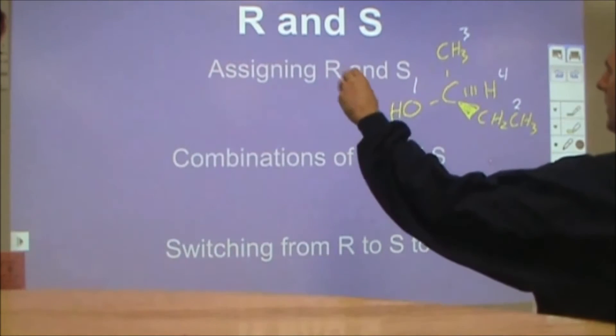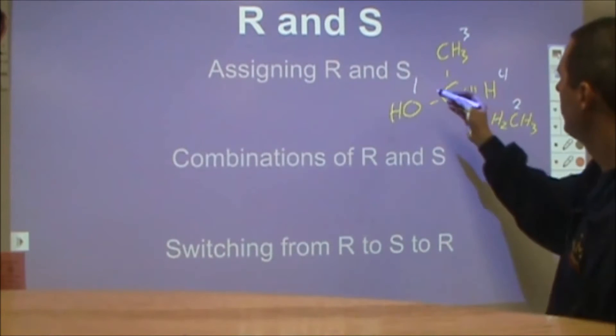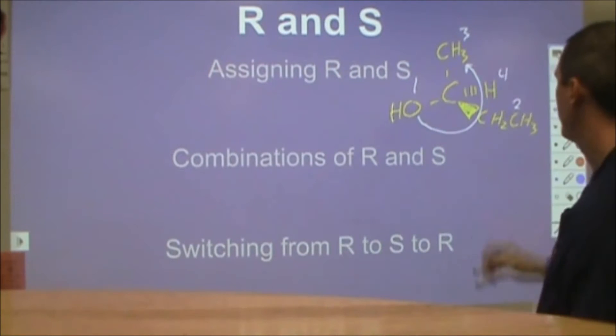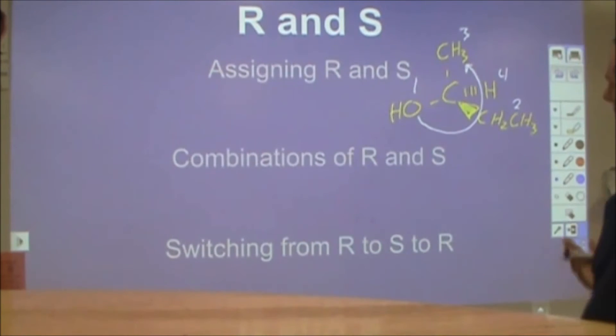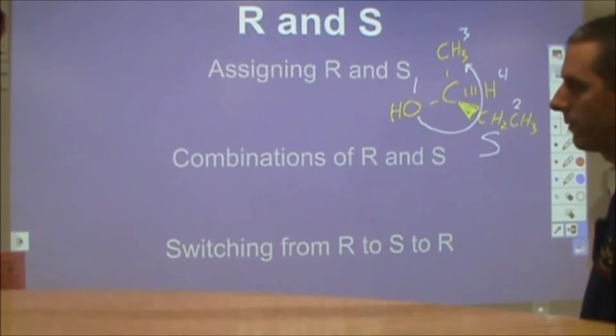And when you do that, you want to see if one, two, and three will go clockwise or counterclockwise. So in this case, I would go from one to two to three like this. That's a counterclockwise rotation. For counterclockwise, that's assigned an S. For clockwise, that would be assigned an R.